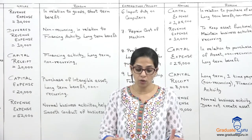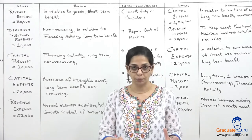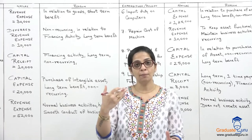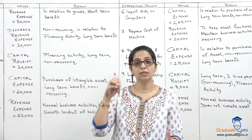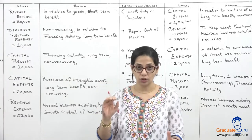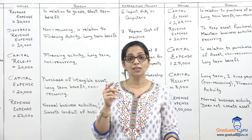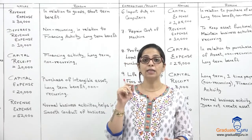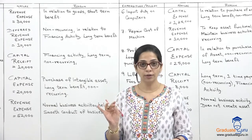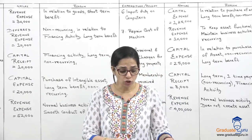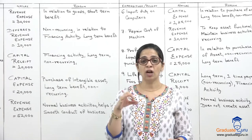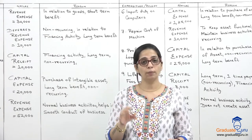Item two: issue of shares of 5 lakhs at a discount of Rs. 10,000. There are two items here. First, the issue of shares — when we issue shares, we receive money which is financing, so the 5 lakhs is a capital receipt that goes to the balance sheet. Second, the 10,000 discount — we have already seen that any discount on issue of shares or debentures is treated as deferred revenue expense. Item three: telephone charges paid for the month — 2,200. This is your normal business expense that helps run the business smoothly, so it is revenue expense.